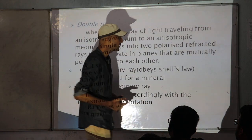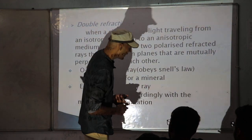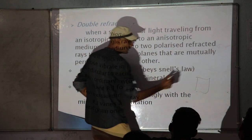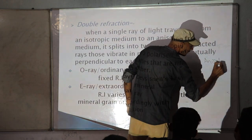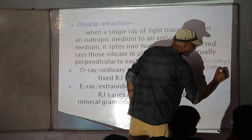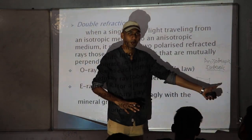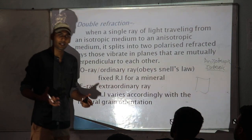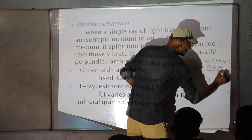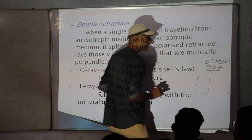Starting with double diffraction — what is double diffraction? Double diffraction means when any anisotropic mineral is placed over the microscope. The terms are anisotropic and isotropic. Isotropic means the properties of the mineral — optical properties like refractive index and velocity of light within the mineral — are the same in all directions. If those properties are different in different directions of the mineral, that is anisotropic.